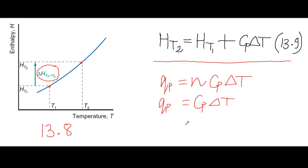So, looking at figure 13.8 again, this means that the enthalpy change as you go from temperature T1 to T2, that increase in enthalpy is going to be given by CP times delta T.